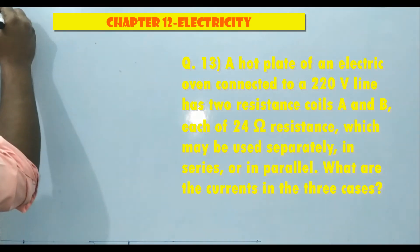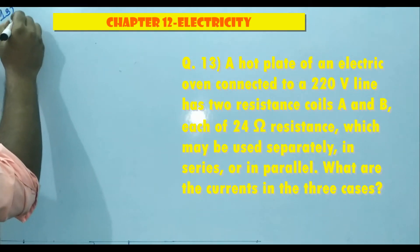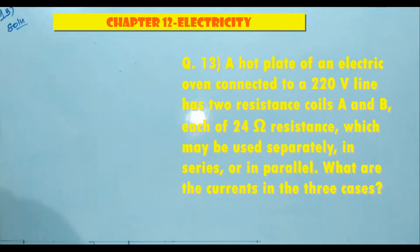Exercise number 13. A hot plate of an electric oven connected to a 220 volt line has two resistance coils A and B, each of 24 ohm resistance, which may be used separately, in series, or in parallel. What are the currents in these three cases?